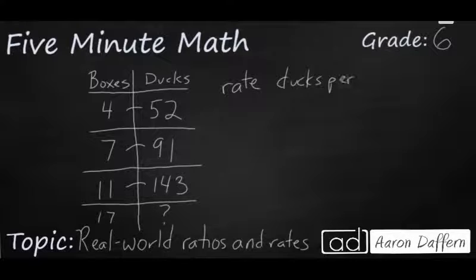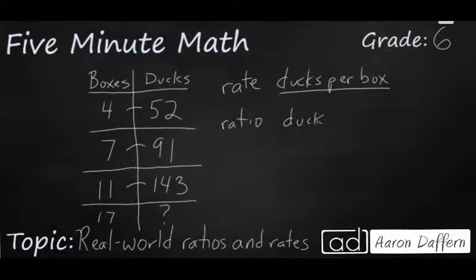Well, really what we're looking for is the rate of ducks per box. Because if we can figure out how many ducks we have in each box, that's going to get us our rule. Then we can multiply that by 17. But we can take this rate here and we can write it as a ratio. So we're going to write that as ducks per box. And if we take any of these numbers, we can figure that out. So let's use this first line: 52 ducks for 4 boxes.